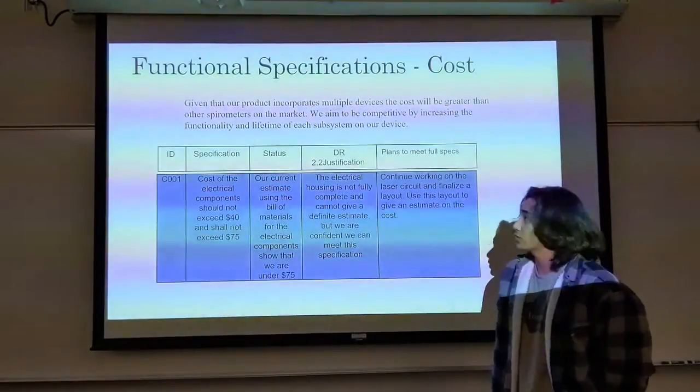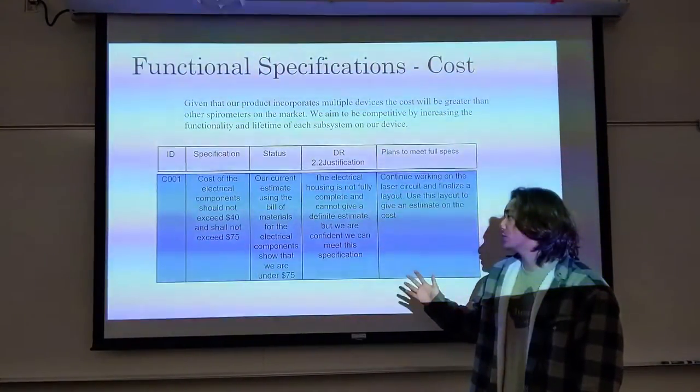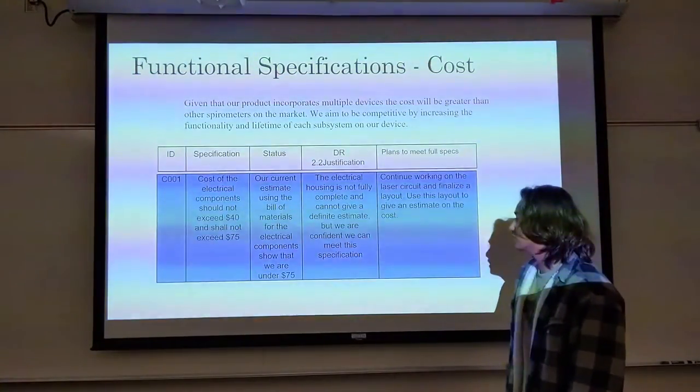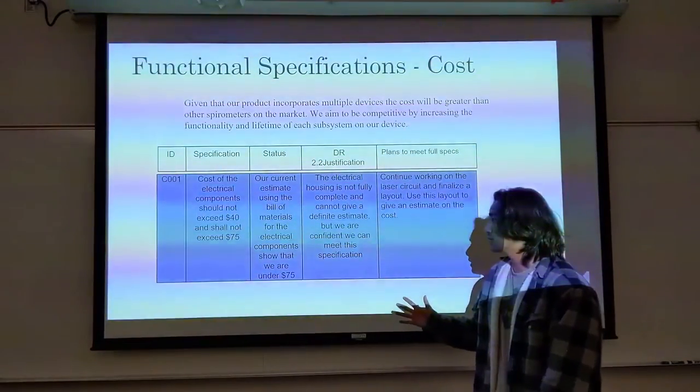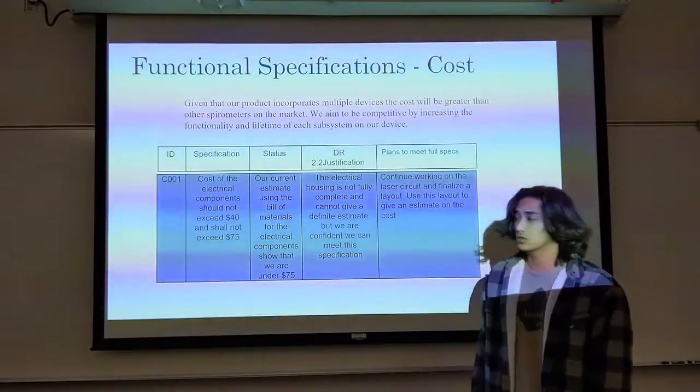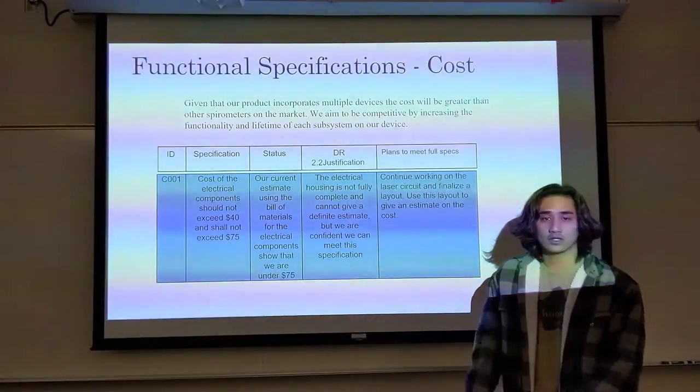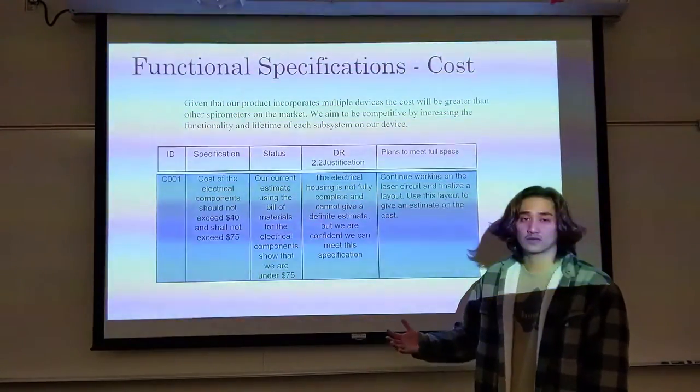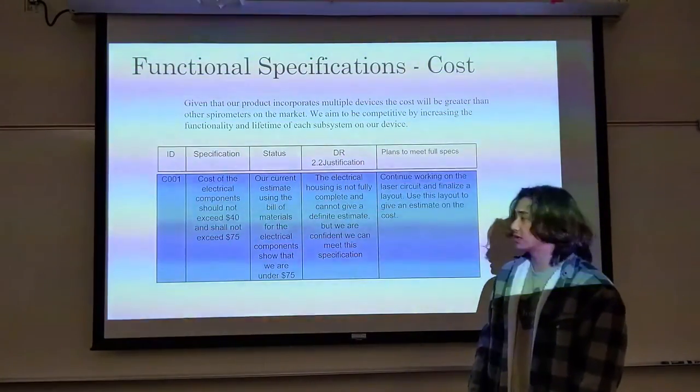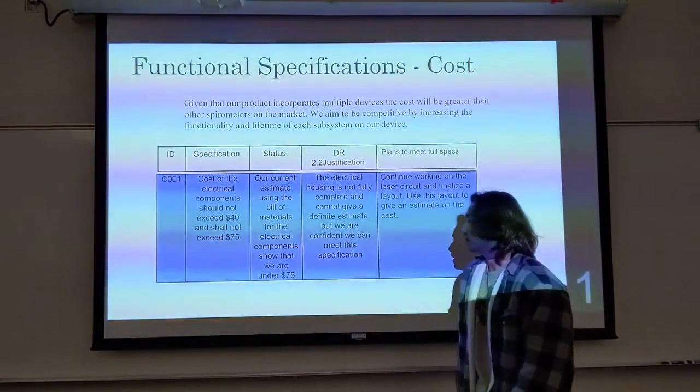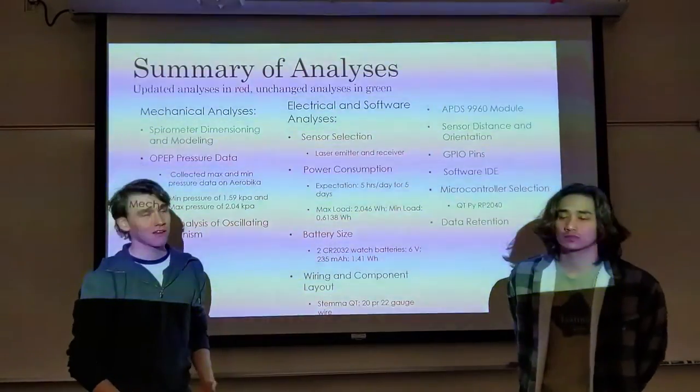Another specification that is important for our project is the cost of the overall system. We said for our specification that our electric component should not exceed $40 and shall not exceed $75. As of right now, the total cost that it would take to make our electrical system is under the $40. But for this next quarter, what we're going to do is implement a PCB board for our electrical system in order to scale down the sizing of our system based on Carrie's objective of sizing, functionality, and cost. So in order to decrease the size, we're going to print out a PCB board, which will raise the cost, but it will be under that $75 with the addition of a PCB board.